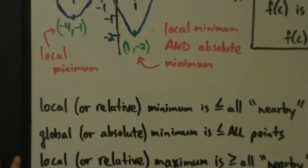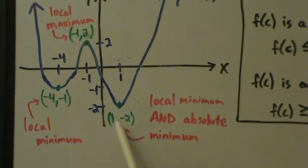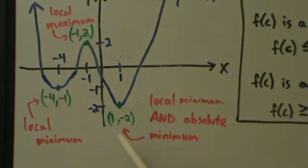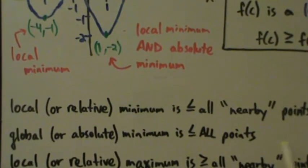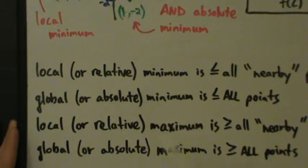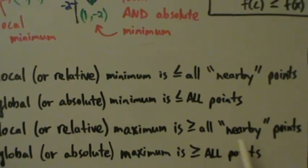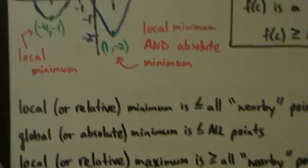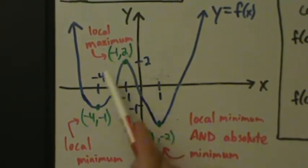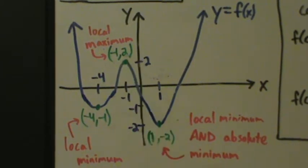Looking at the picture, we see that negative 2 is the smallest y value on the entire function, so this is an absolute minimum — it's less than or equal to all the other points on the function. Likewise, a local or relative maximum is greater than or equal to all the nearby points. If we look at all the nearby points, this is the largest one — it's greater than or equal to all the nearby points, so it's a local max.